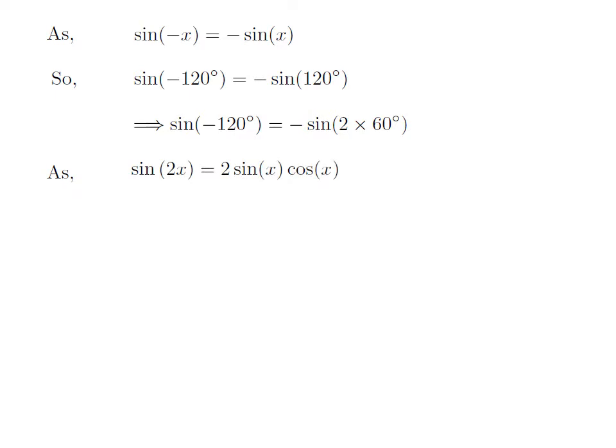As we know, the trigonometry identity sine of 2 times x is equal to 2 times sine of x into cosine of x. The video explaining how to derive this identity is appearing in the upper right corner, and the URL address of the video has been mentioned in the description section.